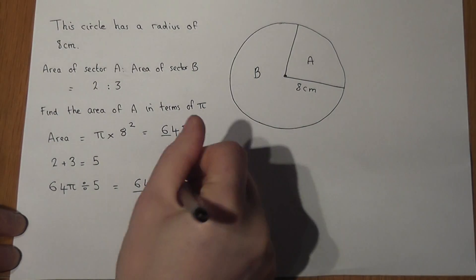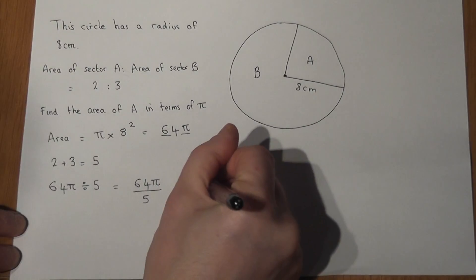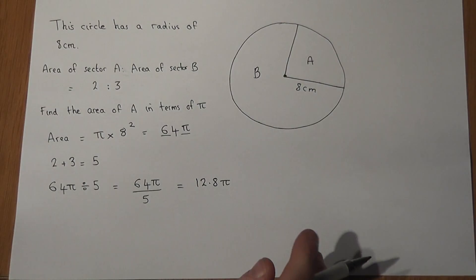Or I could work out 64 divided by 5 which is 12.8. These two expressions are equivalent.